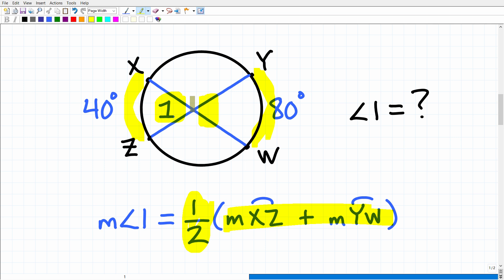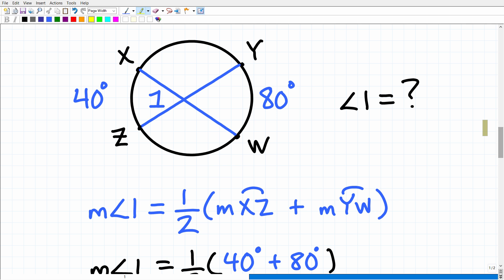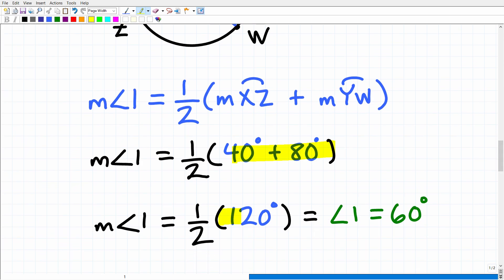Probably the hardest part about this problem is remembering the formula. So let's apply the formula. Very simple now that we know how to solve this problem. So we're going to take 40 plus 80 and average those out. So 40 plus 80 is obviously 120, and one half of 120 is 60. So that is angle 1.